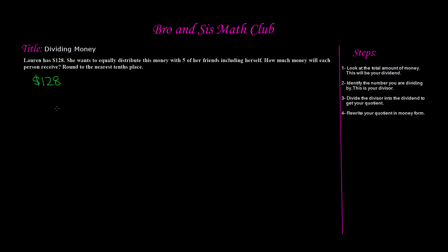Now step two says identify the number you are dividing by and this is your divisor. The number we're dividing by is going to be the number of people we want to equally distribute this money into. It says she wants to equally distribute this money with five of her friends, including herself. It says including herself, which means it's going to be five friends plus herself. So five plus one is six, right?